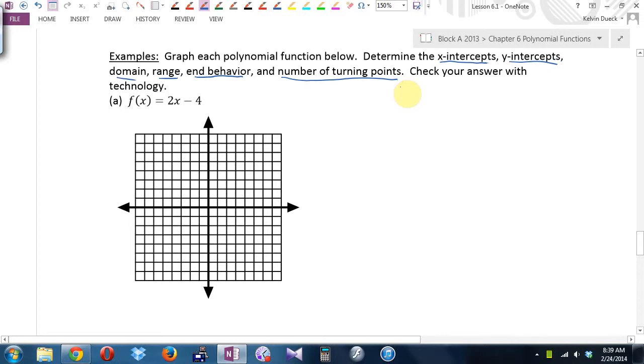Then it says check your answer with technology. Actually, this first one, that line graph A, is that a line, a quadratic, or a cubic? It's linear. And in fact, it's in slope-intercept form. What's the y-intercept? I don't think I need technology for this one.